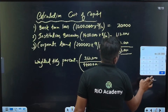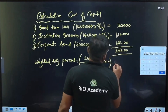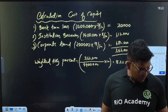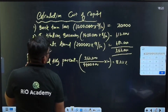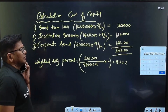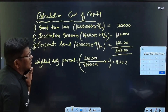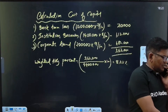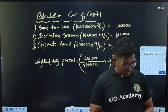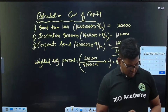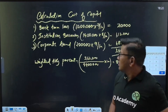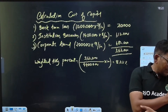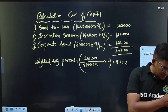Weighted average percentage: total 44 lakhs, weighted average cost of capital is approximately 8.22%. This much is enough.